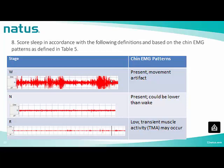For chin EMG patterns: stage W is associated with present tone and movement artifacts. Stage N is characterized by present tone, which may be lower than wakefulness. In stage R, tone is low — the low chin EMG tone is detected when baseline EMG activity in the chin derivation is no higher than in any other sleep stage, and usually at the lowest level of the entire recording. Transient muscle activity consists of short irregular bursts of EMG activity, usually less than 0.25 seconds duration, superimposed on low EMG tone.